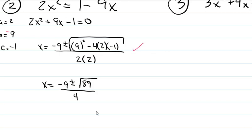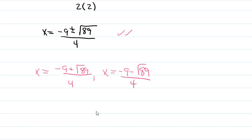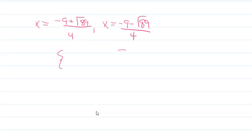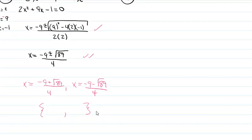You get one point for substituting, and two points for your answer because of the plus or minus. The answer can be written as x equals negative 9 plus square root of 89 over 4 and x equals negative 9 minus the square root of 89 over 4. You might also see it written with braces. Check with your instructor for their preferred format.